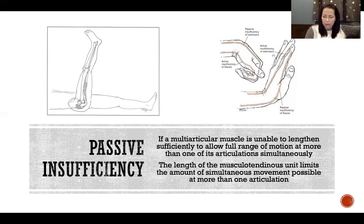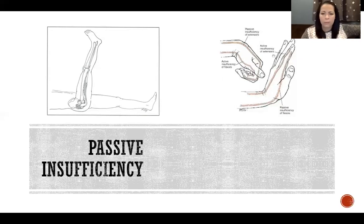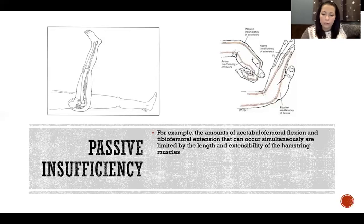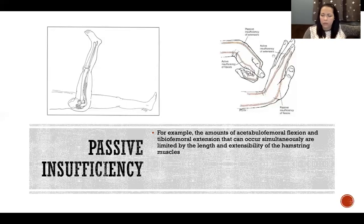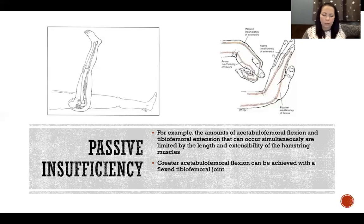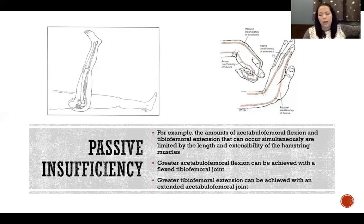The length of the musculotendinous unit limits the amount of simultaneous movement possible at more than one articulation at the same time. For example, how much acetabulofemoral flexion and tibiofemoral extension can occur simultaneously are limited by the length and extensibility of the hamstring muscles. Greater hip flexion can happen with a flexed tibiofemoral joint, and greater tibiofemoral extension can happen with an extended acetabulofemoral joint.